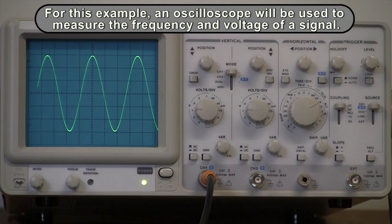For this example, an oscilloscope will be used to measure the frequency and voltage of a signal.